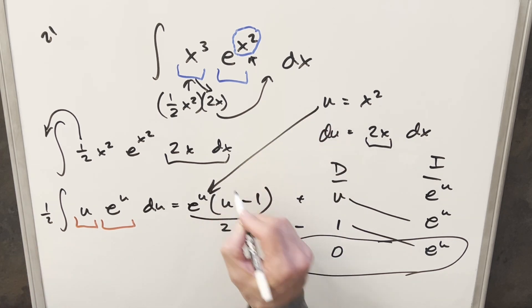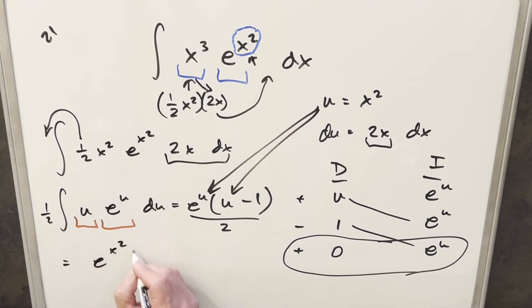Just need to back substitute in order to finish this off. So for my final solution on this, we just get e to the x squared, times x squared minus 1, all over 2, plus c, and that's it.